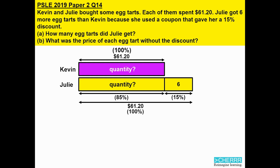From the diagram, you will know that we do have a match. 15% is actually matched to 6 tarts. And if 15% is 6 tarts, we can find 1% by dividing by 15, which gives us 6/15 tarts.